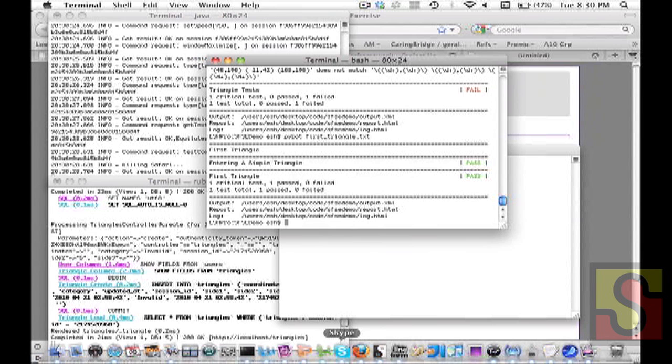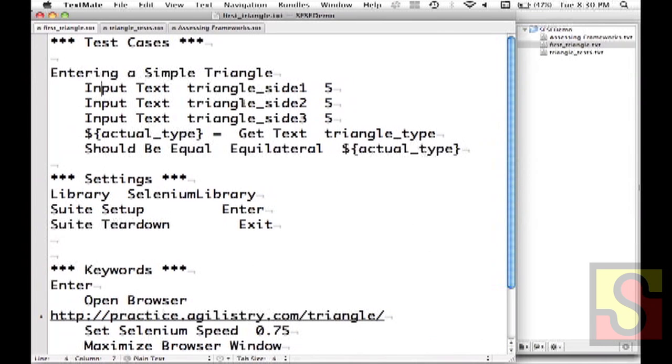Now the thing about Robot Framework being a keyword driven framework is that we can refactor this test without actually having to go all the way to writing code. You can have keywords on top of keywords on top of keywords. It's keywords all the way down, kind of like turtles all the way down. If I were writing this for a production environment I would never want to leave a test that looks like this.